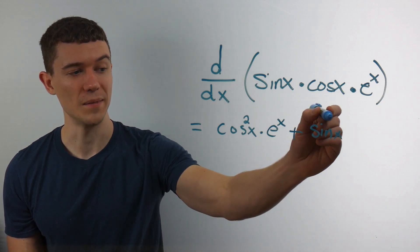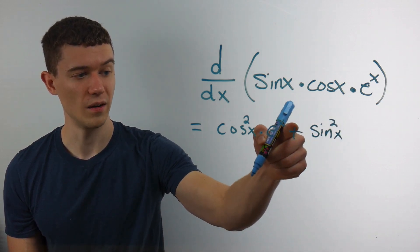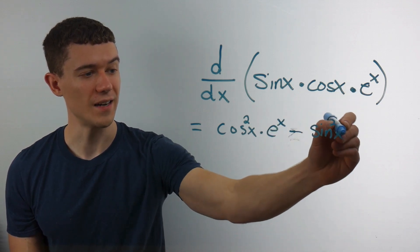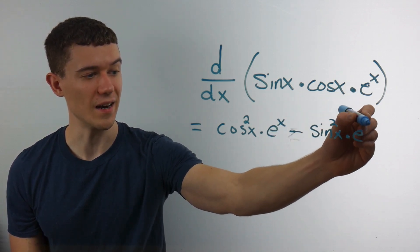So I have negative sine times sine. I guess I'll make that squared and I'll just make this a minus. And then it's times e to the x.